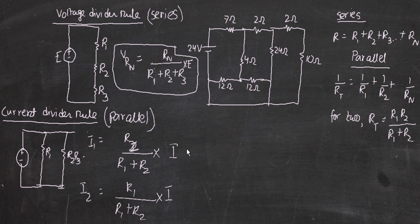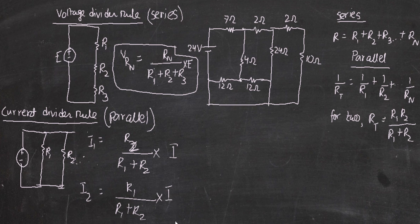To find the current across any resistor, you take the resistor opposite to it, divide it by the total resistance, and then multiply by the total current. For example, to find the current across R2, it's R1 divided by (R1 + R2) multiplied by I. So you always take the opposite resistor, divide by total resistance, and multiply by total current.